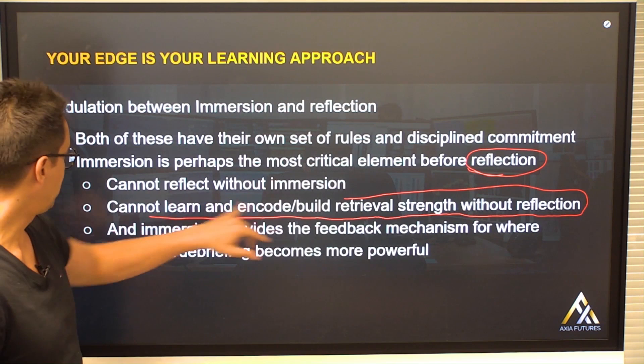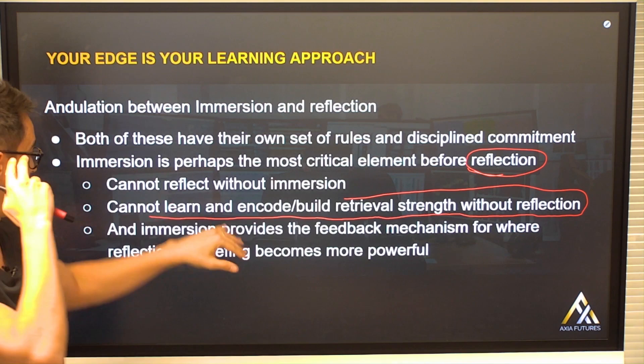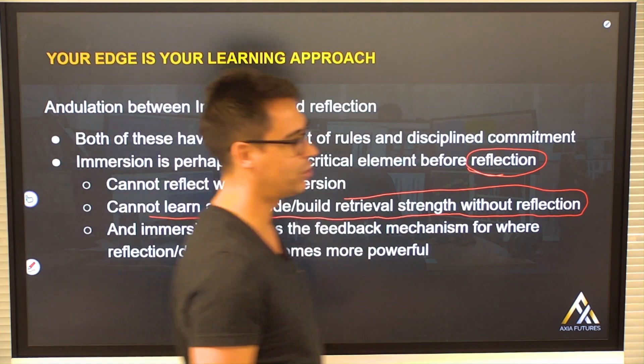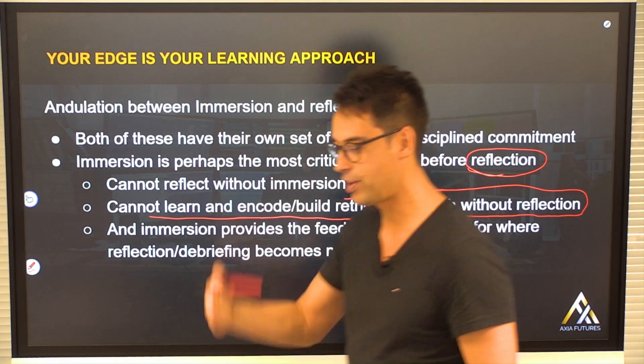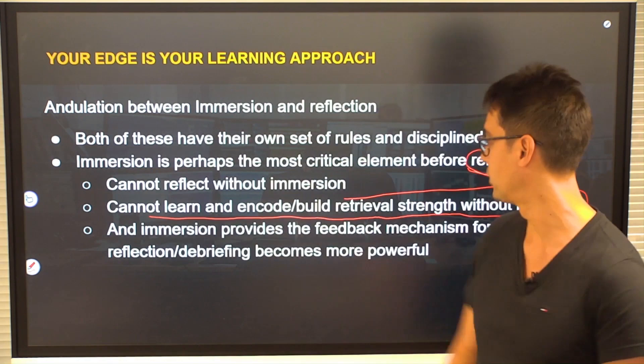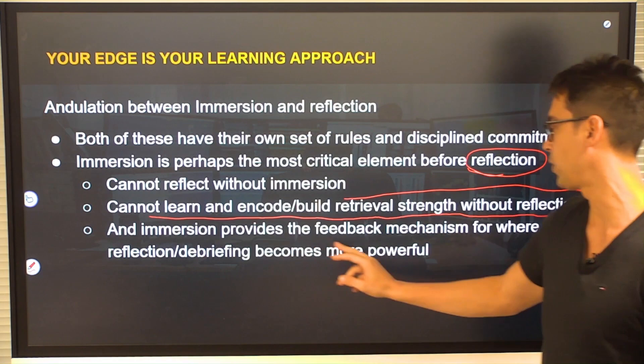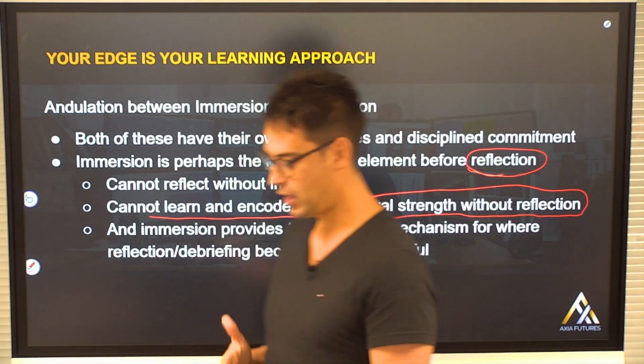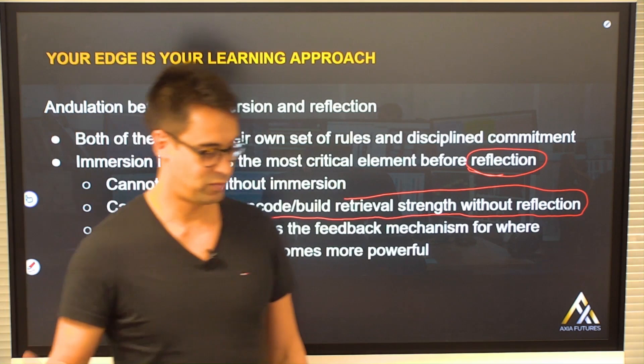What happens on the weekends? If one weekend you do your debrief and the next weekend you don't, you're never going to allow your brain to develop the consistency of observing patterns. The brain can observe patterns within itself if you give it a structure — templates and a consistent approach. Immersion provides a feedback mechanism where reflection and debriefing becomes more powerful. Anything you do just for the sake of doing, with no purposeful end, is wasted, inefficient time.